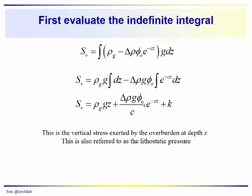And so we have a minus times a minus. We get a plus Δρ g φ₀ over c e^(-cz). And then we have our constant for the indefinite integral. So this is the vertical stress exerted by the overburden at a depth z. And we also refer to that as the lithostatic pressure.